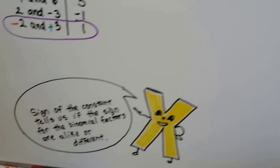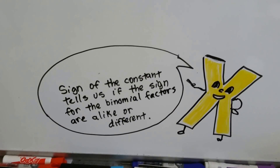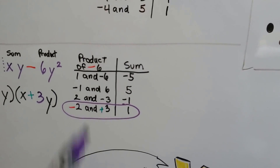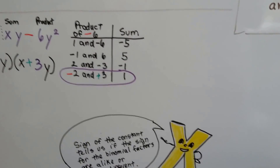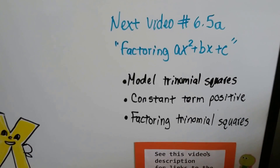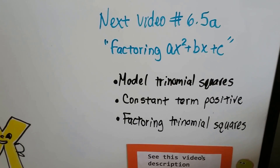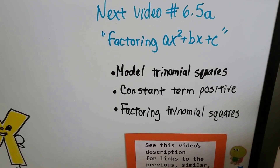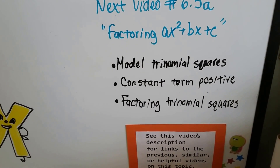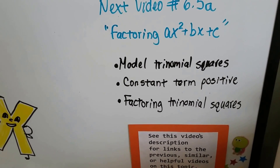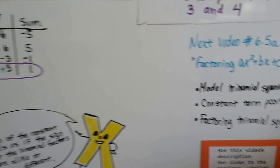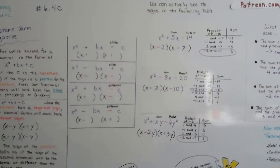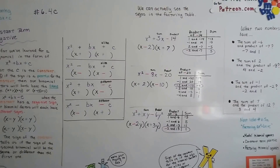Remember: the sign of the constant — the third term in a trinomial — tells us if the signs of the binomial factors are alike or different. But if you use a factoring table, that'll also tell you. In our next video, we're going to be factoring a trinomial in the form ax squared plus bx plus c. There'll be links to modeling trinomial squares, factoring trinomial squares, and constant term positive in the description of this video — links you can just click on for a good review. That's constant term negative. See you next video.